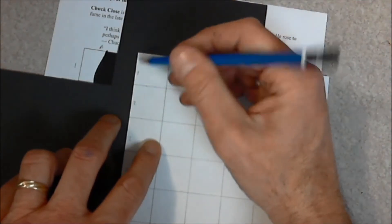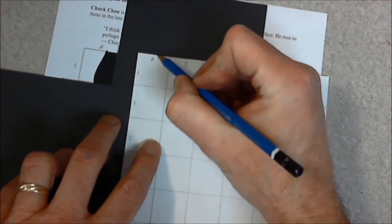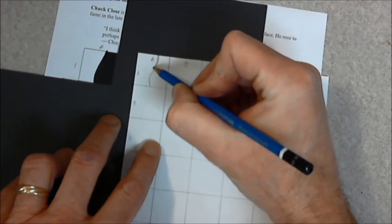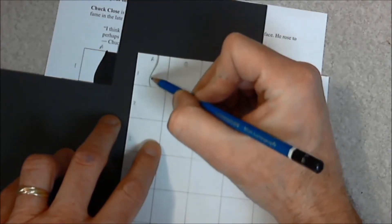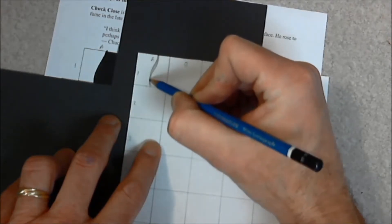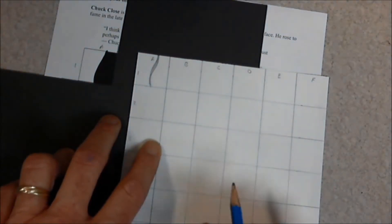So now this is even simpler to look at. So what's happening in square 1A? Well, I've got this line that does about that. Not quite that. There, that's a little bit better.